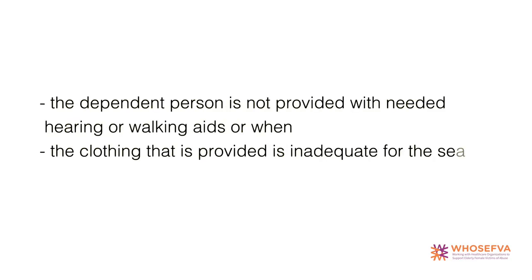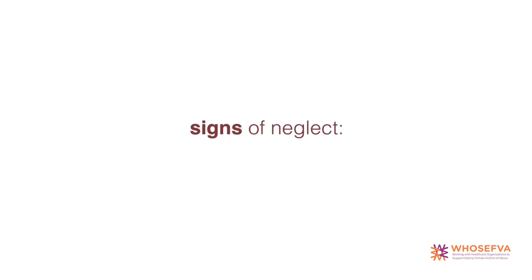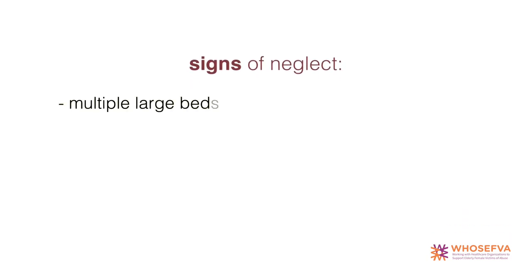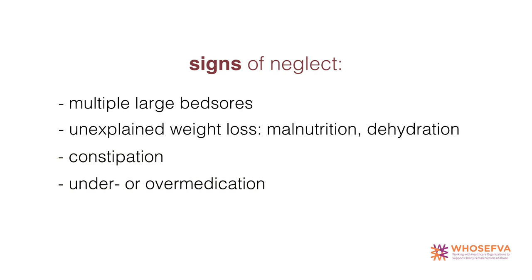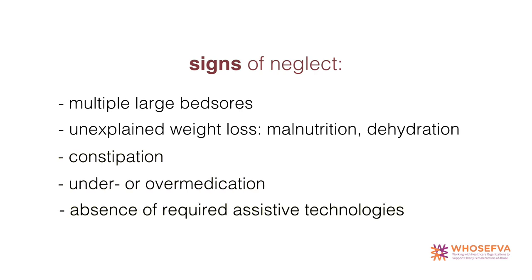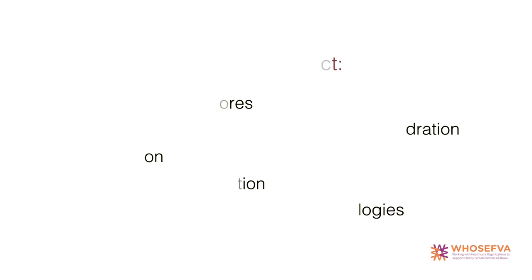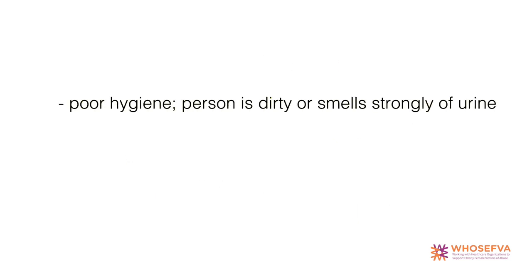The dependent person is not provided with needed hearing or walking aids, or the clothing provided is inadequate for the season. Possible signs of neglect include multiple large bed sores, unexplained weight loss, malnutrition or dehydration, constipation, under or over medication, absence of required assistive technologies, poor hygiene — the person is dirty or smells strongly of urine.